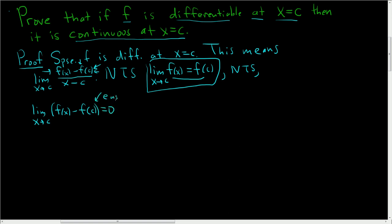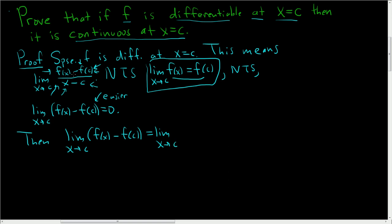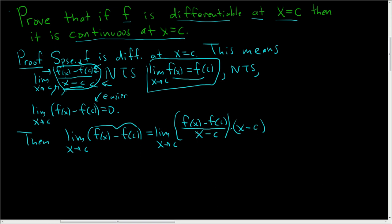This might be an easier route based off what we have with differentiability. So the limit as x approaches c of f of x minus f of c equals the limit as x approaches c of f of x minus f of c times x minus c, all divided by x minus c. Now we know that the limit as x approaches c of x minus c is equal to 0, and the limit of the difference quotient exists because the function is differentiable. So this will be f prime of c times 0, which is 0.